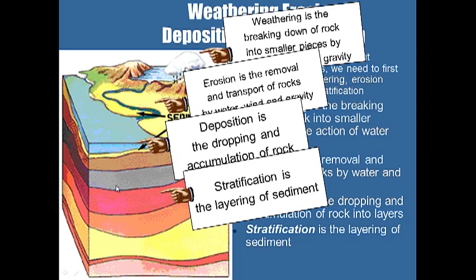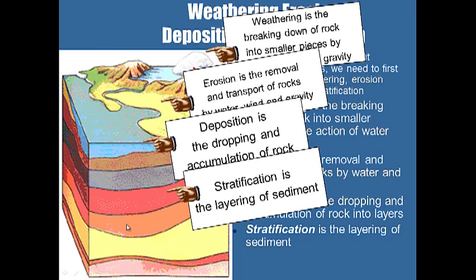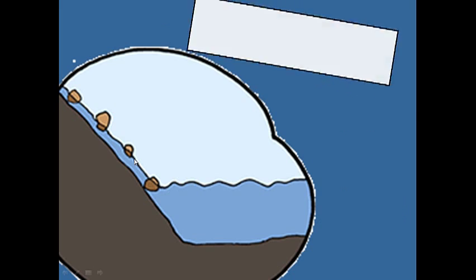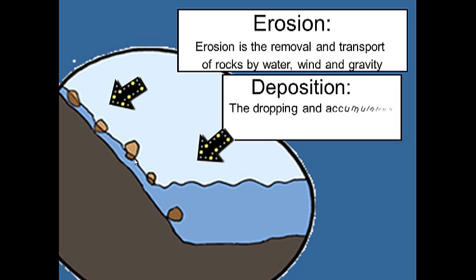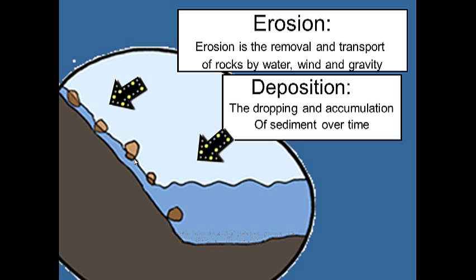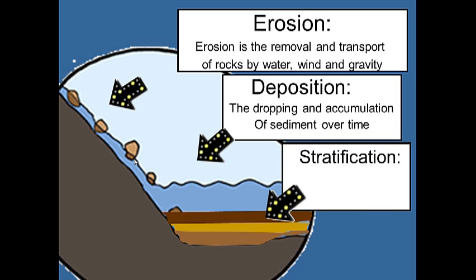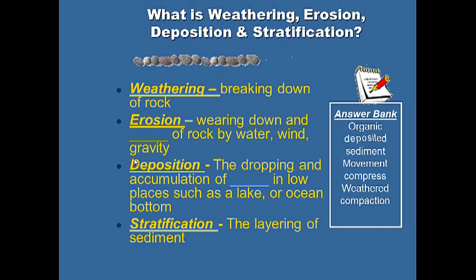As sediment piles up, it makes what we call stratification — the layering of sediment. These layers form flat over time. As we get deposition, we get stratification: sediments are deposited and over time they make layers, with older layers down here and younger layers up here. So we go from old at the bottom to young at the top.